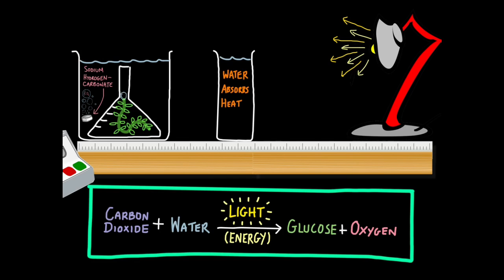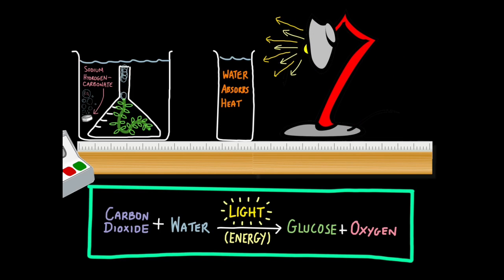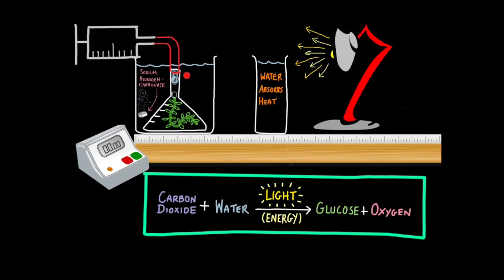So what I do is I just move the lamp closer to the pondweed over here and I count how many bubbles leave every single minute. The closer I bring the lamp, the greater the light intensity. So the bubbles will start to leave at a faster rate, you'd assume, because photosynthesis is happening at a faster rate. So I could count bubbles per minute but I could also use a gas syringe to collect that oxygen and give me a precise volume of oxygen produced every minute.